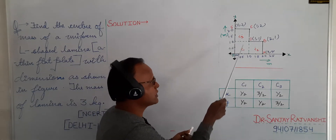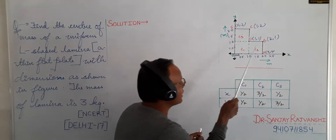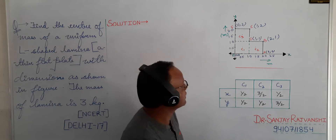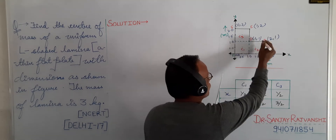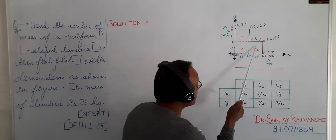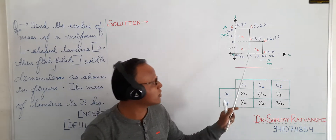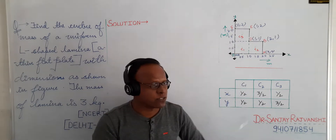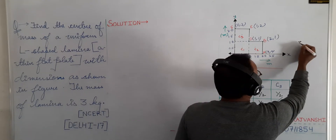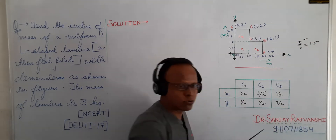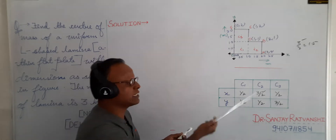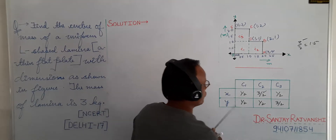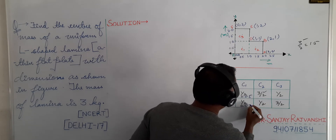So C1 means x1 and y1 are its coordinates. Now we need the coordinate of C2. The x-coordinate of C2 is 1.5 and the y-coordinate is 0.5. So 1.5 means 3/2. I mark here 3/2 because 3 by 2 equals 1.5. The calculation is simple, that's why I write 3/2, or you can write 1.5 also. The unit is meters.